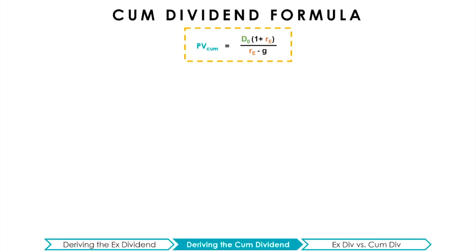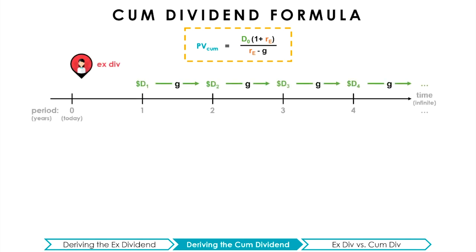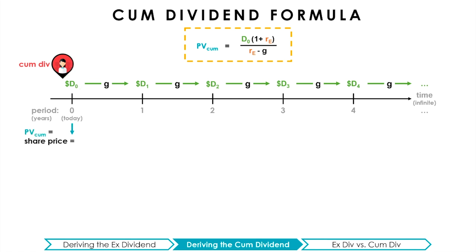Now that we have walked through the derivation of the ex-dividend formula, we can quickly understand how the cum-dividend formula is derived. The key difference is that when using the cum-dividend formula, we expect to receive D0 — the dividend that will soon be paid this period — which is missed in the ex-dividend scenario. Thus, the cum-dividend formula not only considers infinitely many future dividends, but must also account for D0. Following the same steps, we rewrite the dividends expressed in terms of our first term, D0.